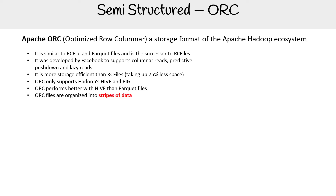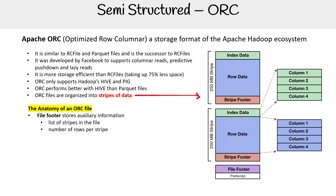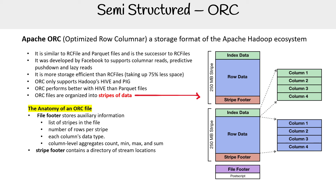ORC files are organized into stripes of data. Here is that example — the anatomy of an ORC file. The file footer stores the auxiliary information: the list of stripes in the file, the number of rows per stripe, each column's data type, and column-level aggregate information such as count, min, and max. The stripe footer contains a directory of stream locations.